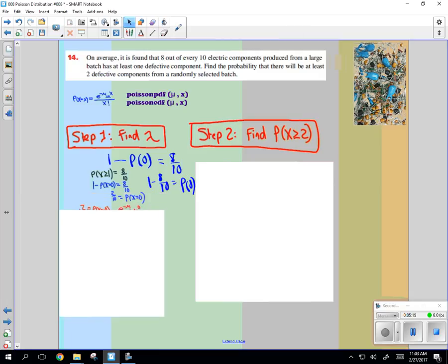So, now that's what x equals 0. Now, what you can do, it says find the probability that there will be at least 2. Well, we need to find lambda first. We need to find lambda. And I think I found lambda.